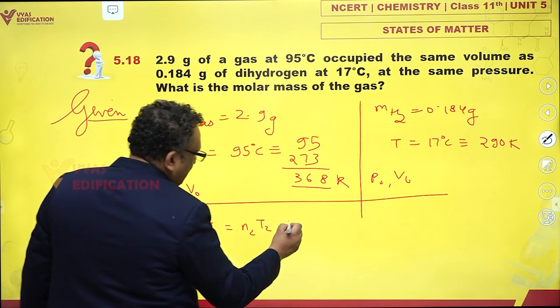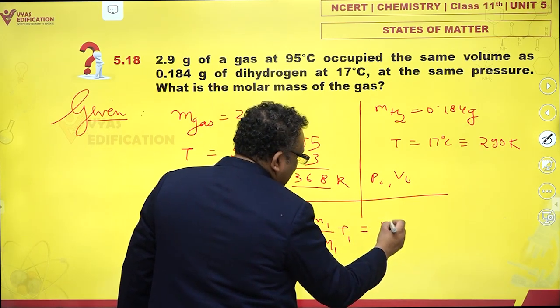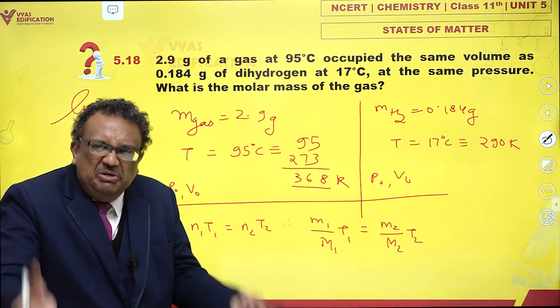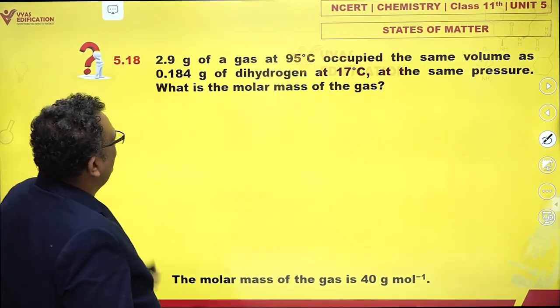I have molar mass, so m₁ upon capital M₁ times T₁ is m₂ upon capital M₂ times T₂. What do we do? We substitute, that's it. Let's do that and see.